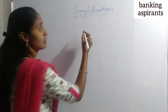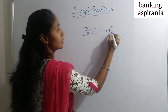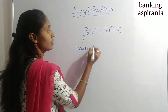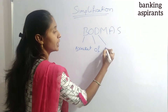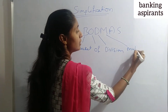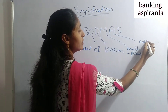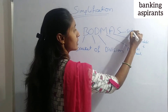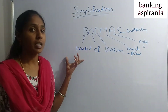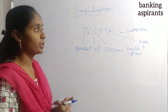Simplification is based on one formula: BODMAS. B stands for Bracket, O for Of, D for Division, M for Multiplication, A for Addition, and S for Subtraction. This BODMAS rule is useful to solve any simplification in any competitive exam.